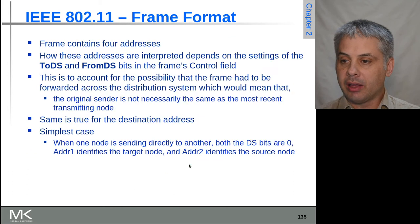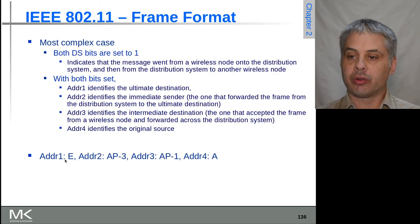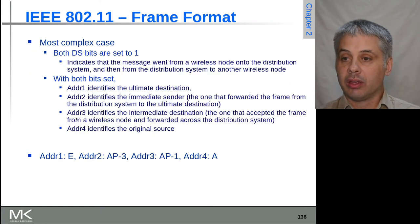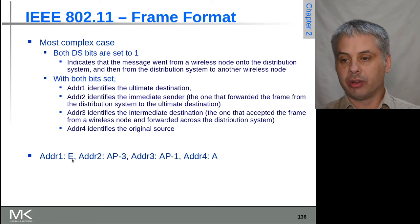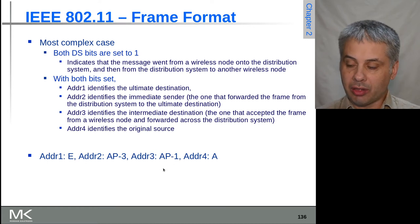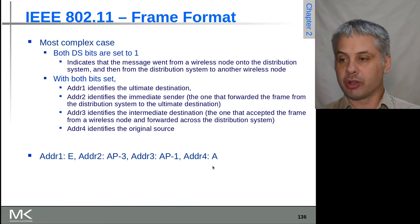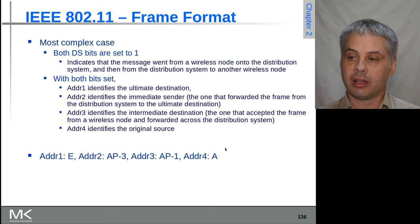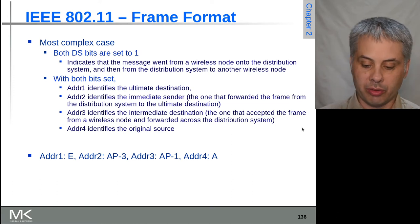Address three identifies the intermediate destination — where the frame next went to — and address four identifies the original source. For example, if A is communicating with E: E goes to access point three, access point three goes to access point one, access point one goes to A. So address one is the ultimate destination E, address two is access point three, address three is the intermediate destination, and address four is the original source. This way we know the exact path and can prevent loops.